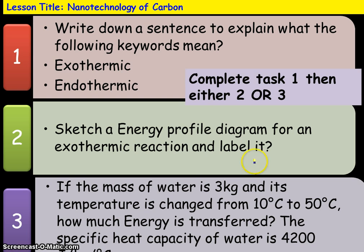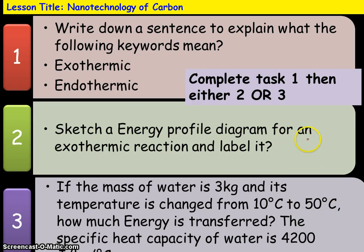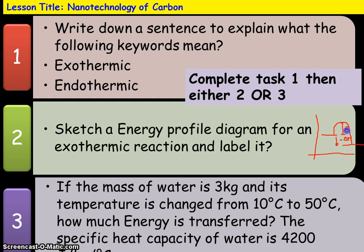If you were sketching an energy profile diagram for an exothermic reaction, its general shape should look like this. You start with a specific energy level and then you have to put some energy in, which will be your energy of activation. For an exothermic reaction, the energy line will be lower at the end of the reaction, giving a negative delta H. This bit here represents the energy of activation, which we label EA.